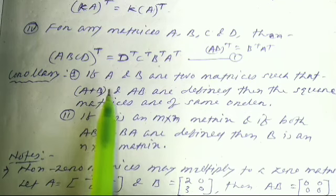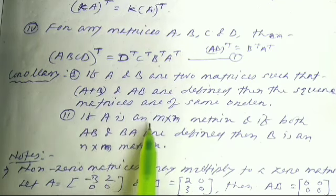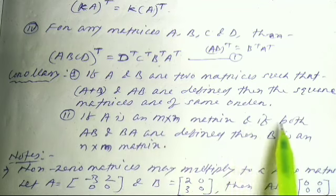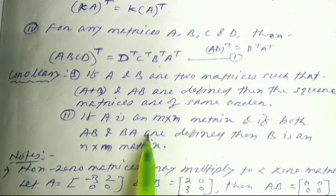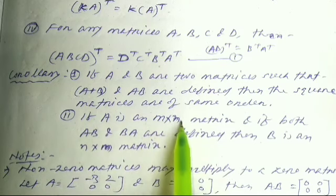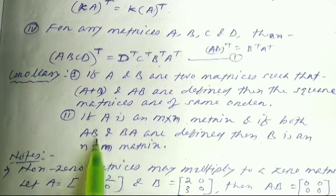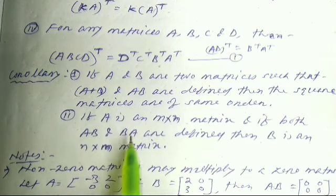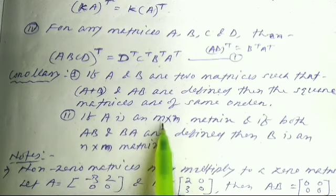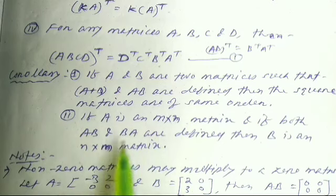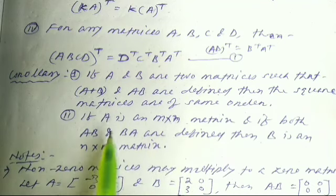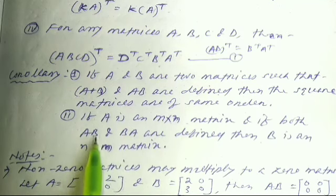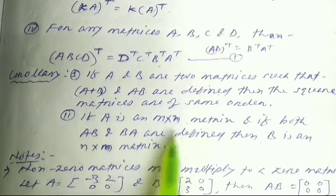Also, if A is a matrix of order m×n and both A·B and B·A are defined, then B must be a matrix of order n×m. This shows that A·B and B·A can both be defined, but A·B is not necessarily equal to B·A — they are products of different resulting orders unless both are square.